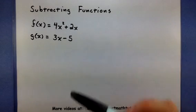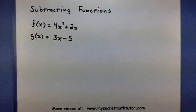For this, I've borrowed two functions, f and g. You can see that f is 4x squared plus 2x, and g is 3x minus 5.